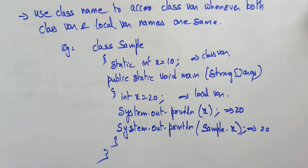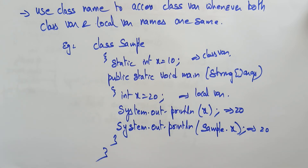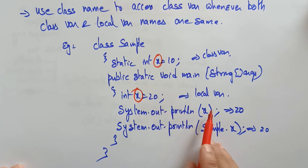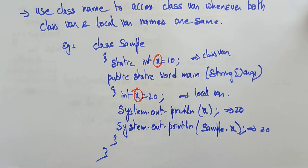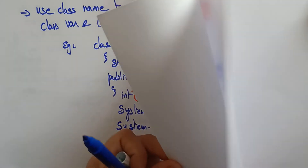So when the class variable and local variable names are the same — here both are x — you must give a clear command to the compiler. Access the local variable directly, but to access the class variable use the class name. I'll now take a simple example in the IDE using Notepad to demonstrate all variable types.